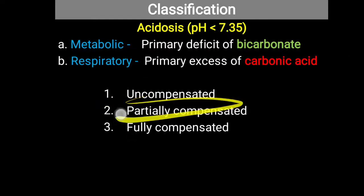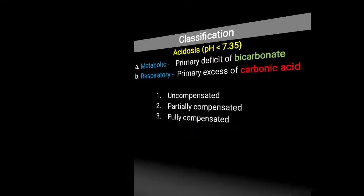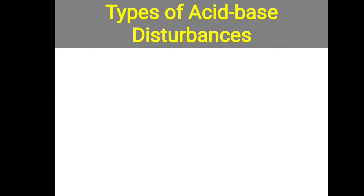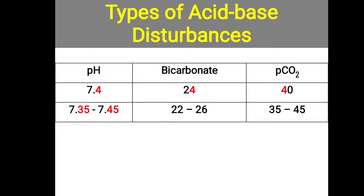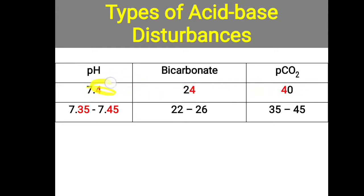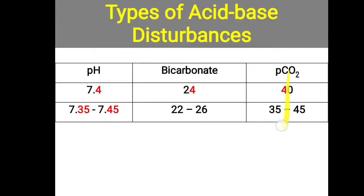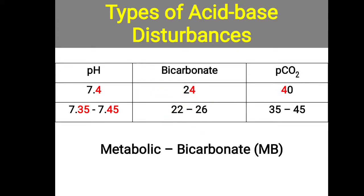There is a simple trick to understand and identify metabolic acidosis. You must remember three key values — think of the number four: pH is 7.4, bicarbonate is 24 mEq/L, and PaCO2 is 40 mmHg. Normal ranges are: pH 7.35–7.45, PaCO2 35–45 mmHg, and bicarbonate 22–26 mEq/L. For metabolic disorders, bicarbonate is the predominant molecule affected — it decreases in metabolic acidosis and increases in metabolic alkalosis.